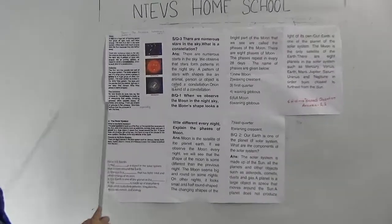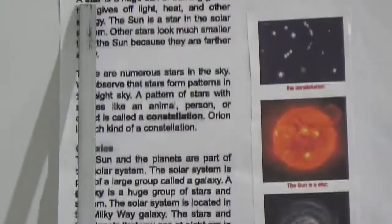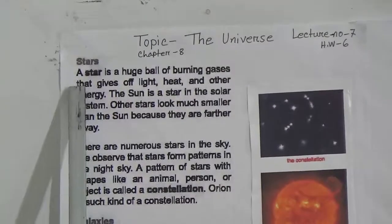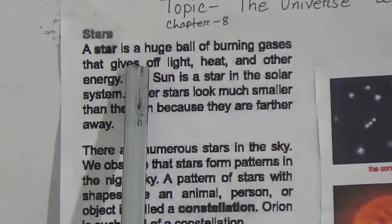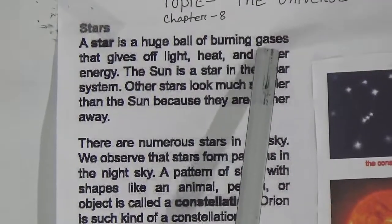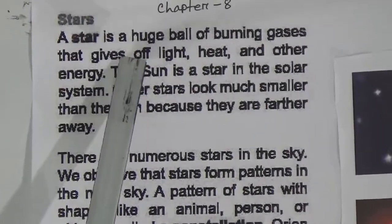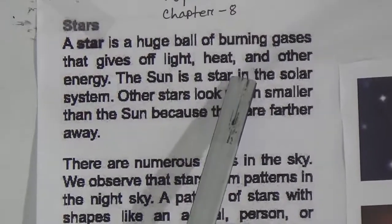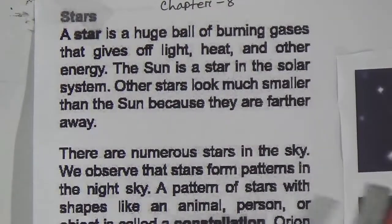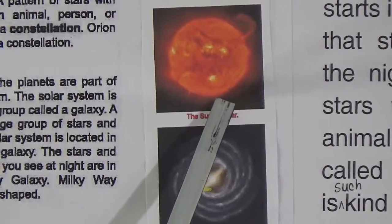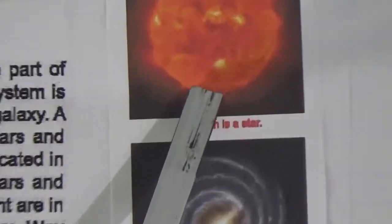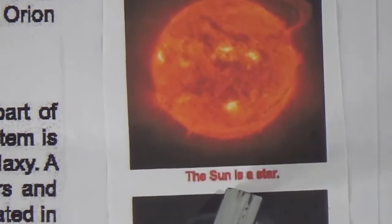First we will read and then we will do some exercises. Stars: a star is a huge ball of burning gases that gives off light, heat, and other energy. You can see this picture — here is the sun, which is a star, a huge ball of burning gases that gives off light, heat, and other energy.